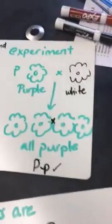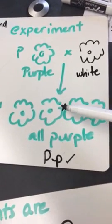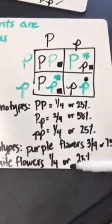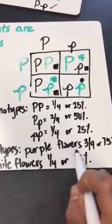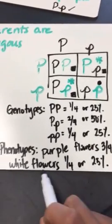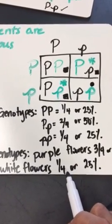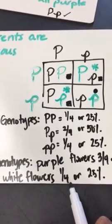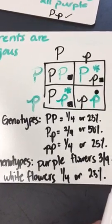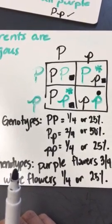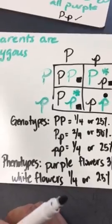And that's what happened when he took two of these offspring, and he crossed them, he came up to a three to one ratio. Three times out of four times, it would turn out to be the dominant color. And then one out of four times, it turned out to be the recessive color. So, what you're going to be doing is, you're going to continue the rest of the activities. And make sure you turn in your work.